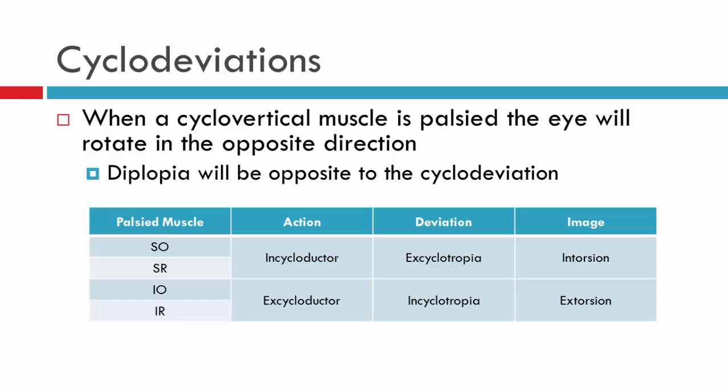The torsion experienced, or the cyclotropia caused by a cyclovertical muscle being palsied, will obviously be dependent on which muscle is palsied. Remember that the diplopia will always be opposite to the deviation, and this applies to cyclo deviations. So if an eye is encycloducted or there's an encyclotropia, the image will be extorted.